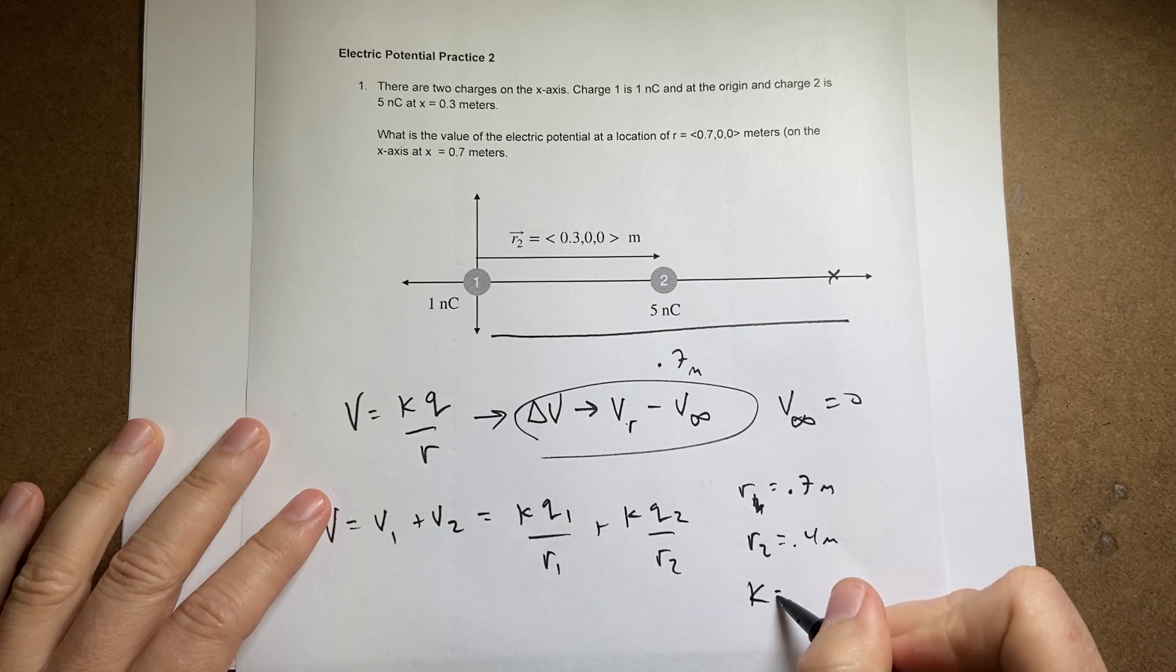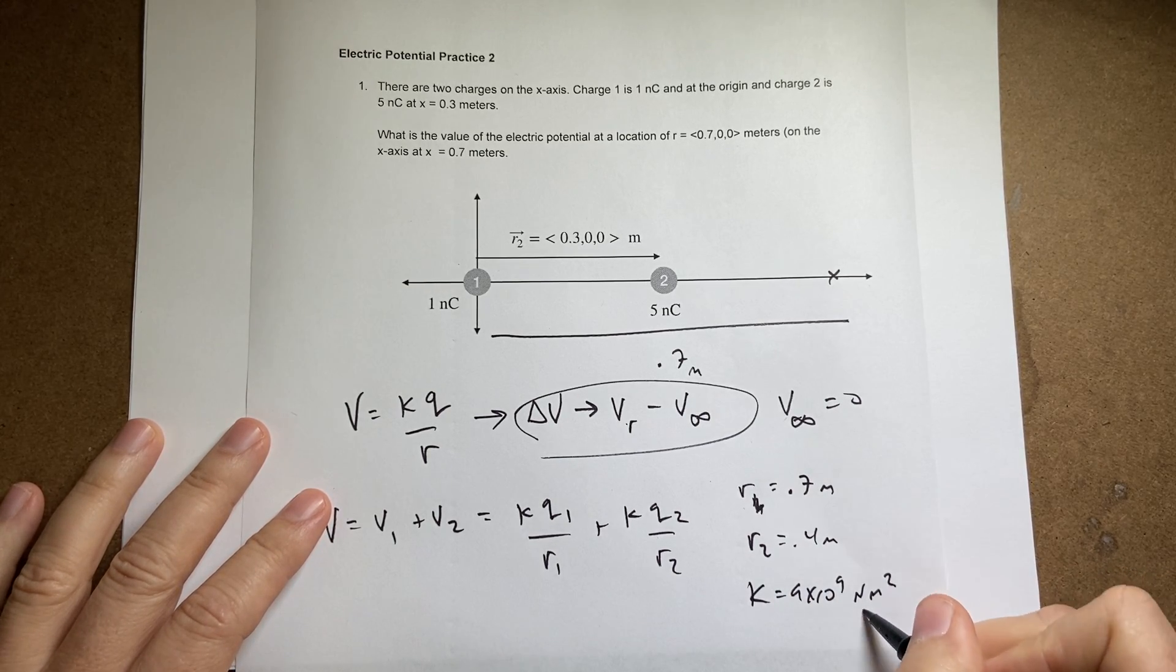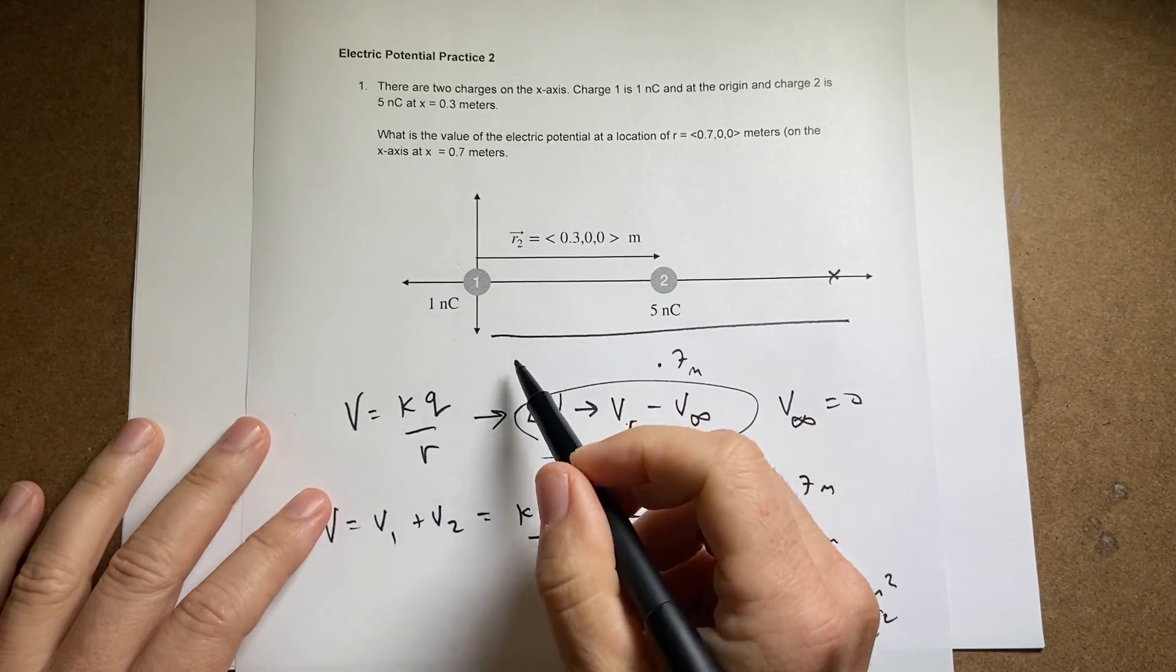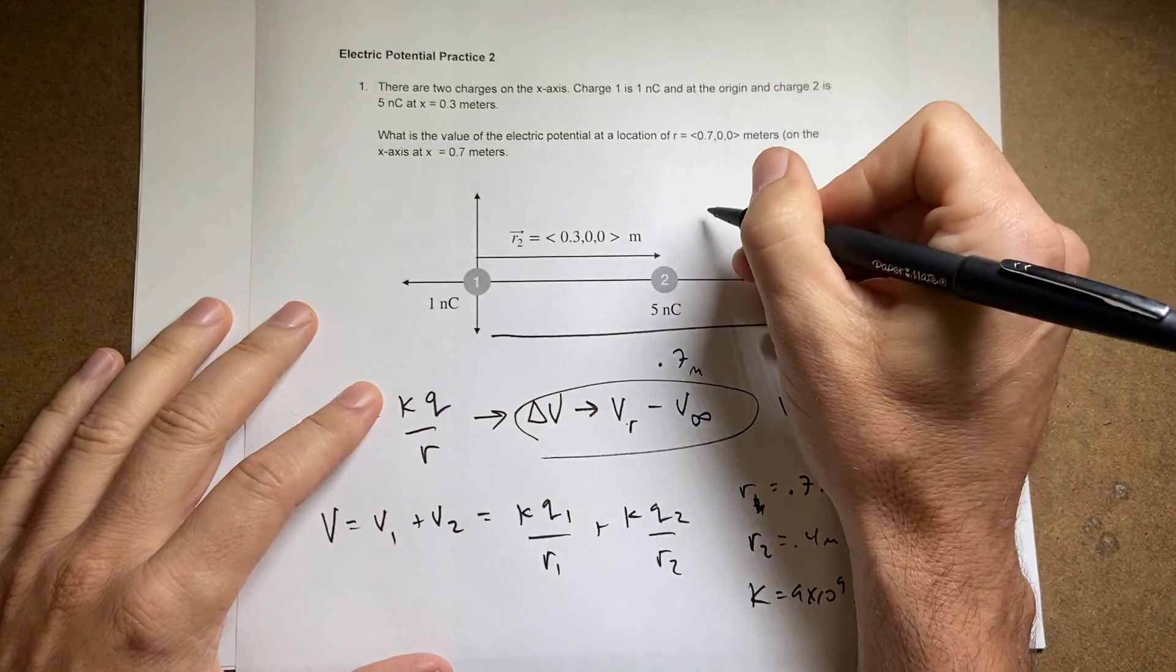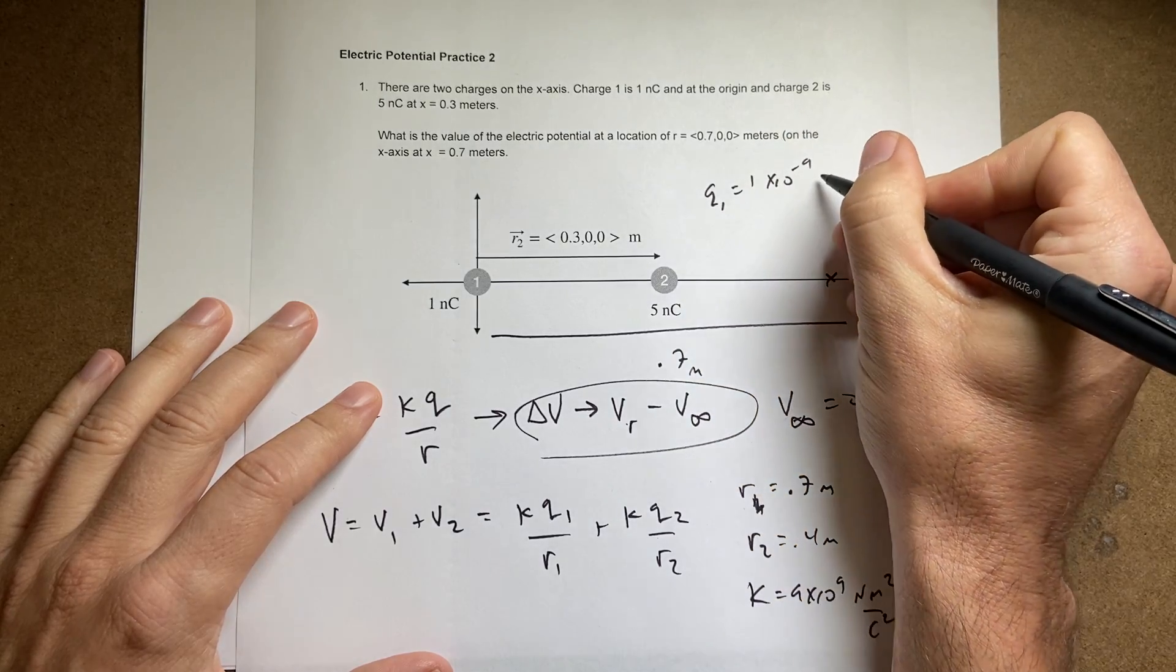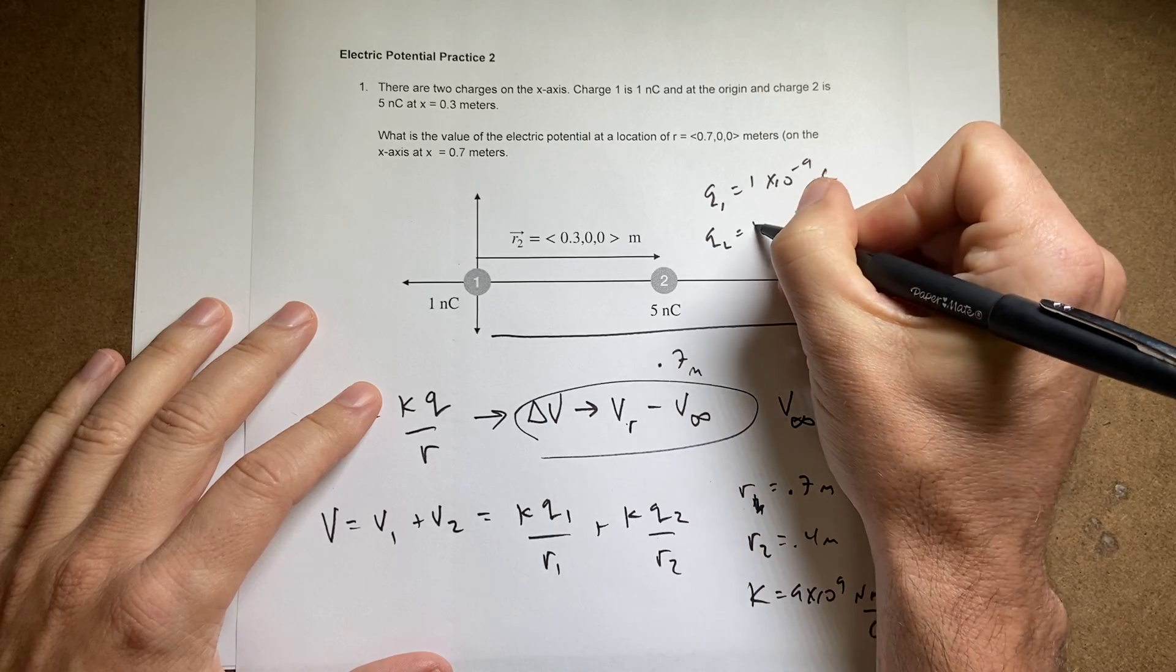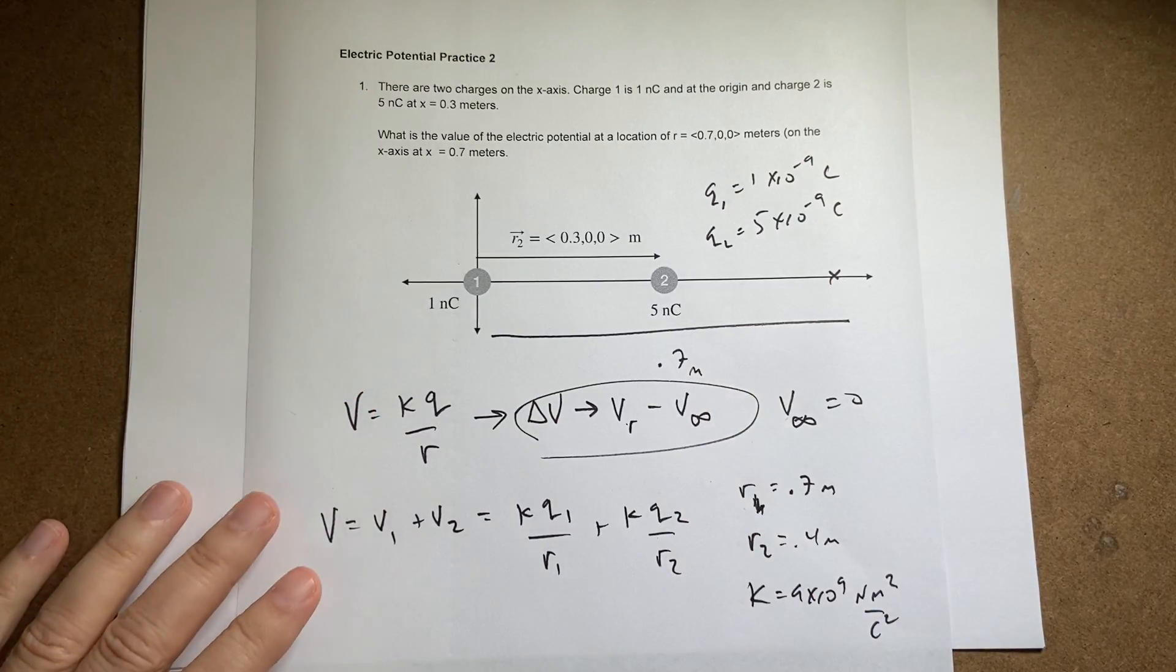k is the constant 9 times 10 to the 9th newtons meters squared per coulomb squared. And then q_1 is 1 times 10 to the negative 9th. Let's write that up here. q_1 is 1 times 10 to the negative 9th coulombs. q_2 is 5 times 10 to the negative 9th coulombs. So let's just put this all together.